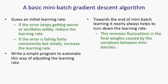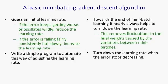And you'd like a final set of weights that's a good compromise. So when you turn down the learning rate, you're smoothing away those fluctuations and getting a final set of weights that's good for mini-batches. So a good time to turn down the learning rate is when the error stops decreasing consistently.